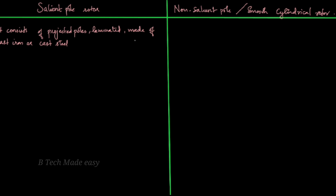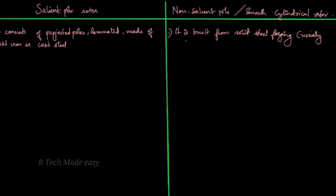For the non-salient pole type, it is built from solid steel — usually chromium-nickel steel. This is the construction used for the non-salient pole rotor.